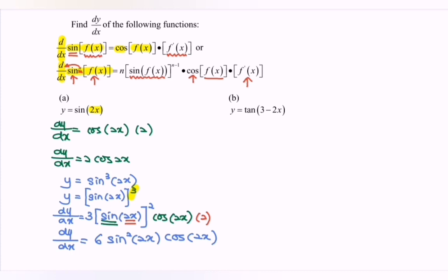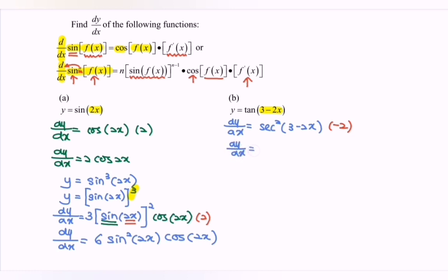Let's say we have (b): y equals tan bracket (3 minus 2x). Differentiate the situation, dy/dx. Focus on the tangent. If we differentiate the tangent, we will have sec squared bracket (3 minus 2x). Next, focus on the internal function 3 minus 2x. If we differentiate, we get negative 2. Rewrite the situation: dy/dx is equal to negative 2 multiplied by sec squared bracket (3 minus 2x).